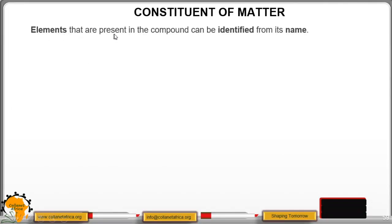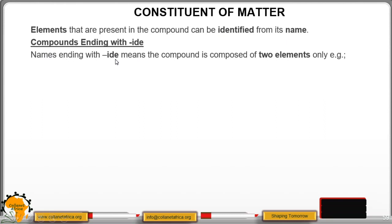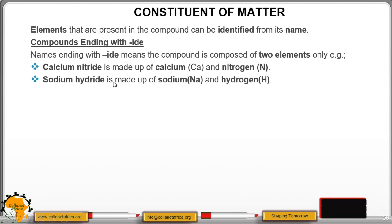We continue. Elements that are present in compound can be identified from its name. Compounds ending with -ide. Names ending with -ide means the compound is composed of two elements only. E.g. calcium nitride is made up of calcium Ca and nitrogen N. Sodium hydride is made up of sodium Na and hydrogen H. An exception of this is hydroxides. E.g. sodium hydroxide NaOH. So although this one ends with -ide, the sodium hydroxide is made up of three elements, that is sodium, oxygen, and hydrogen.